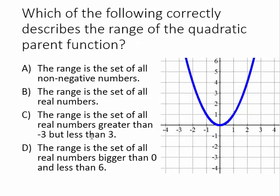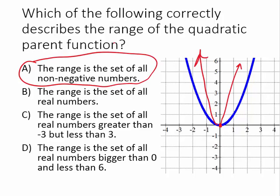Here's another question asking about the range. Please pause the video, work it out, and press play when you're ready to see the answer. The range is all real numbers that are greater than or equal to zero. A says the range is the set of all non-negative numbers, and that is true because starting at zero and going up forever means we include all non-negative numbers — so A is the correct answer. B says the range is all real numbers, but that's not true because we don't include the negatives. C restricts the range from negative three to three, and D says from zero to six — neither is correct because the graph starts at zero and goes up forever.